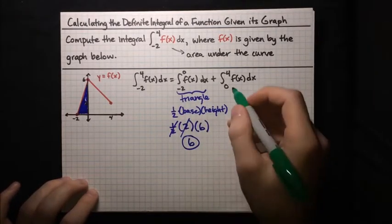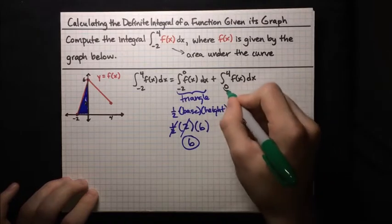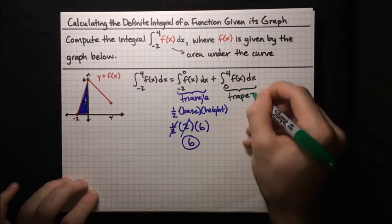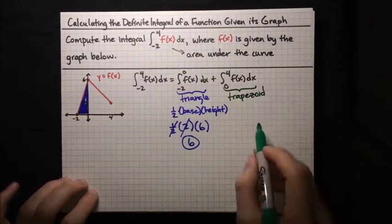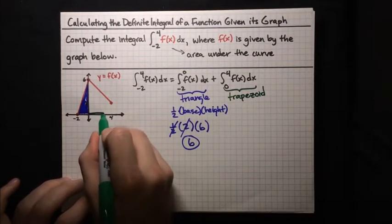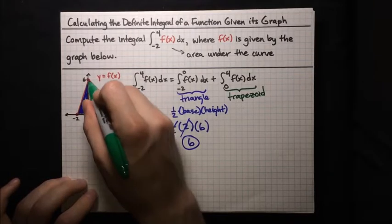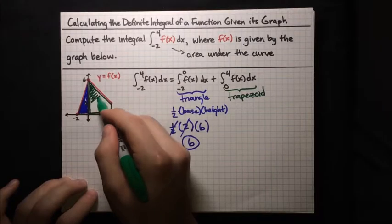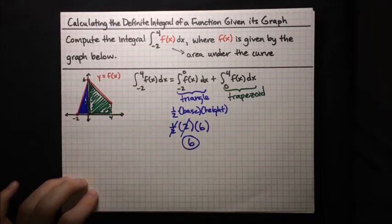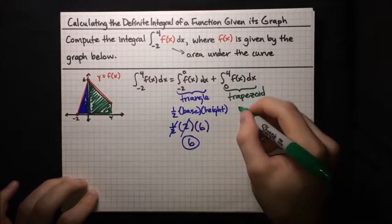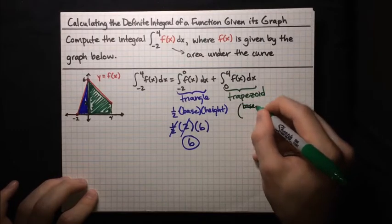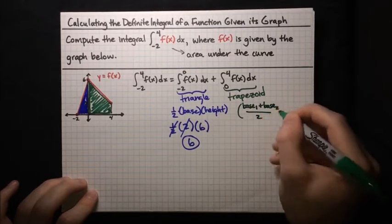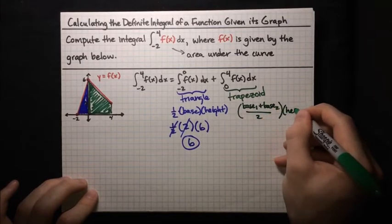Now to deal with the other integral — this one corresponds to a trapezoid. We want to find the area of the trapezoid ranging from x equals 0 to x equals 4, which is this shape here that we want to find the area under.